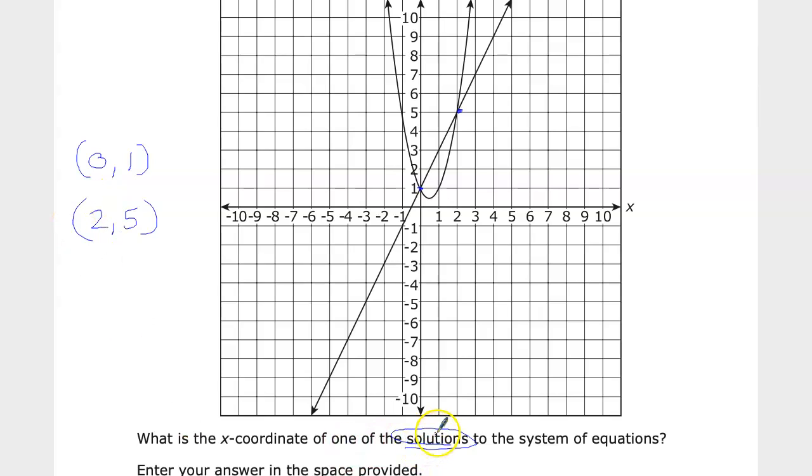Now the solution would indicate that in both functions you have a coordinate pair zero, one, and two, five that make the solution true.